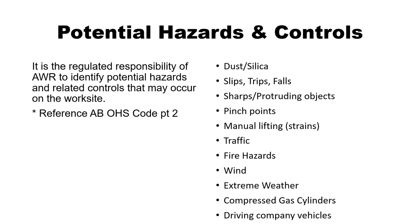It is the regulated responsibility of Alberta Waste and Recycling to identify potential hazards and related controls that may occur on the worksite — reference Alberta OHS Code Part 2. The hazards on our sites include dust and silica, slips, trips, and falls, sharps and protruding objects, pinch points, manual lifting and strains, traffic, fire hazard, wind, extreme weather, compressed gas cylinders, and driving company vehicles.